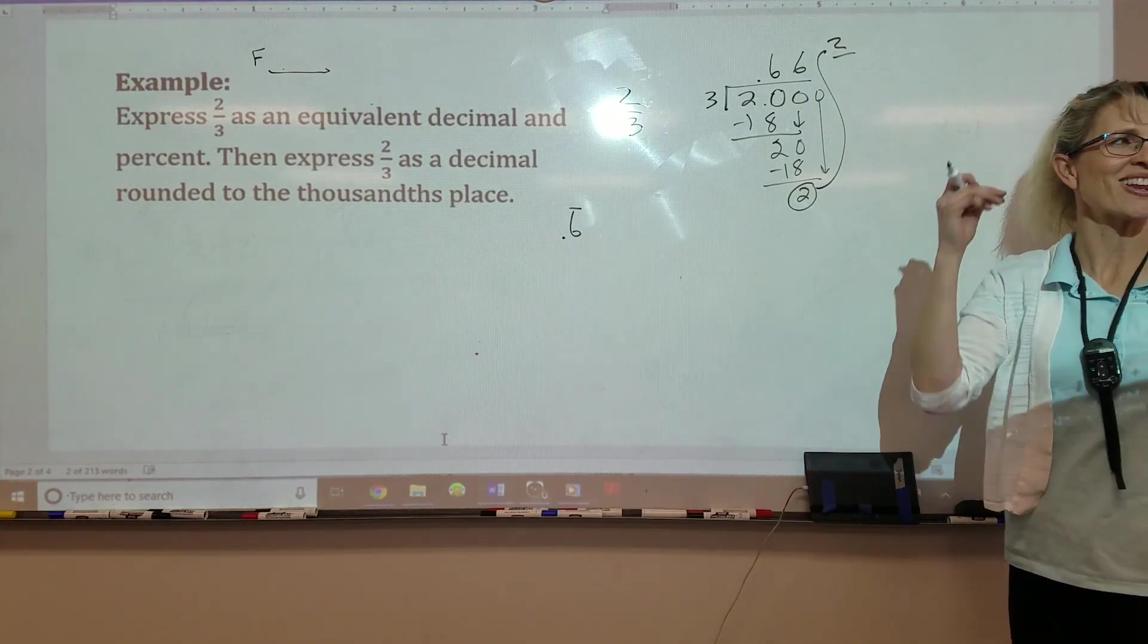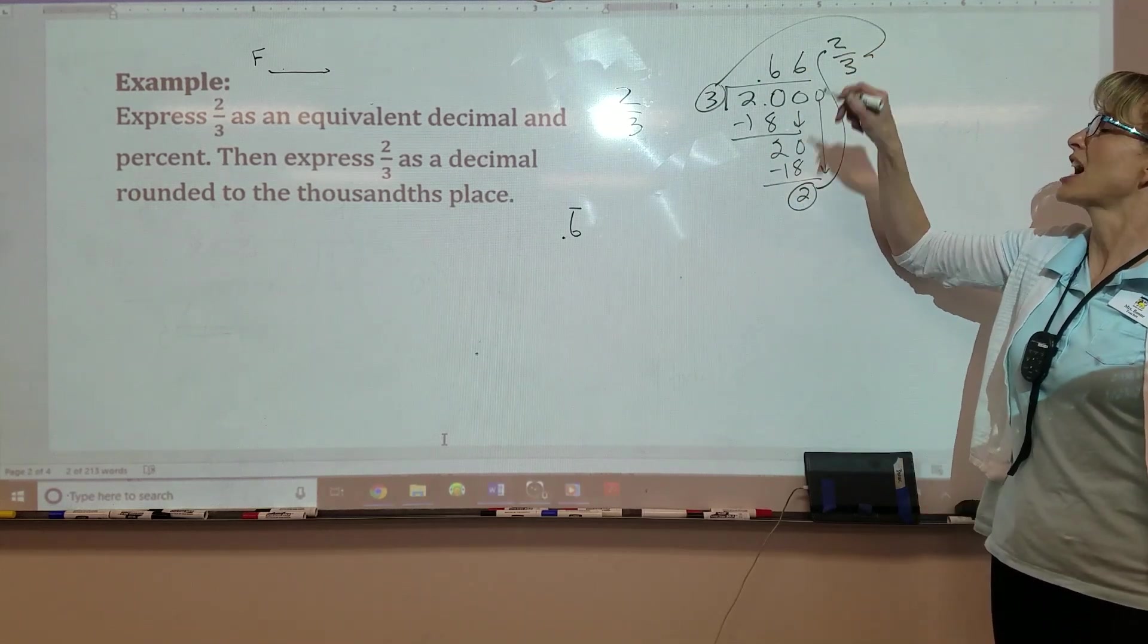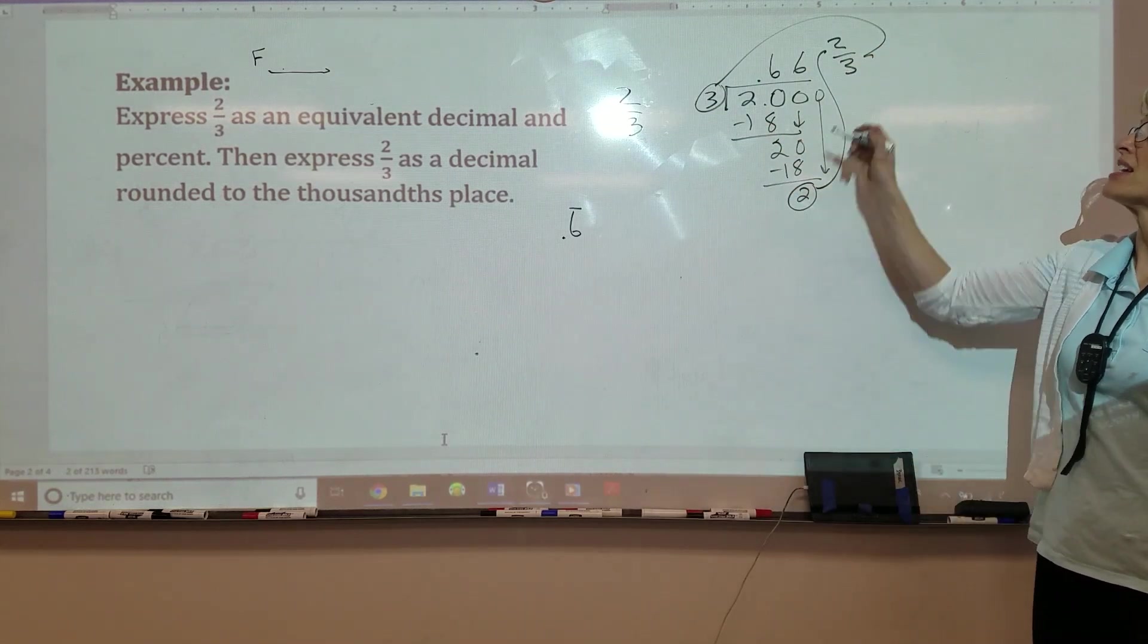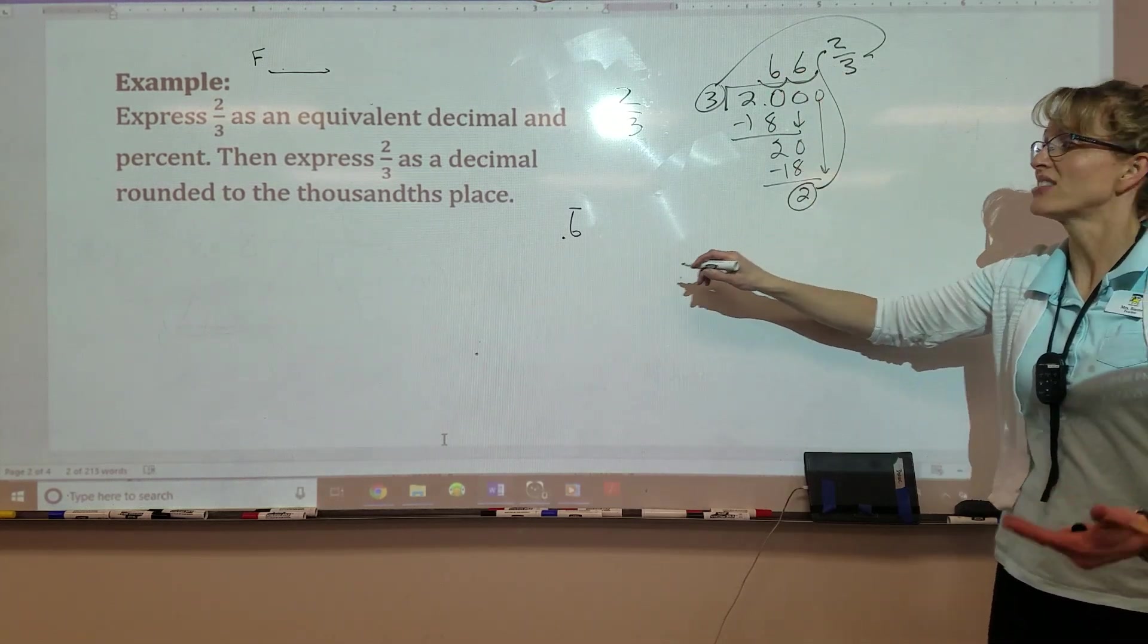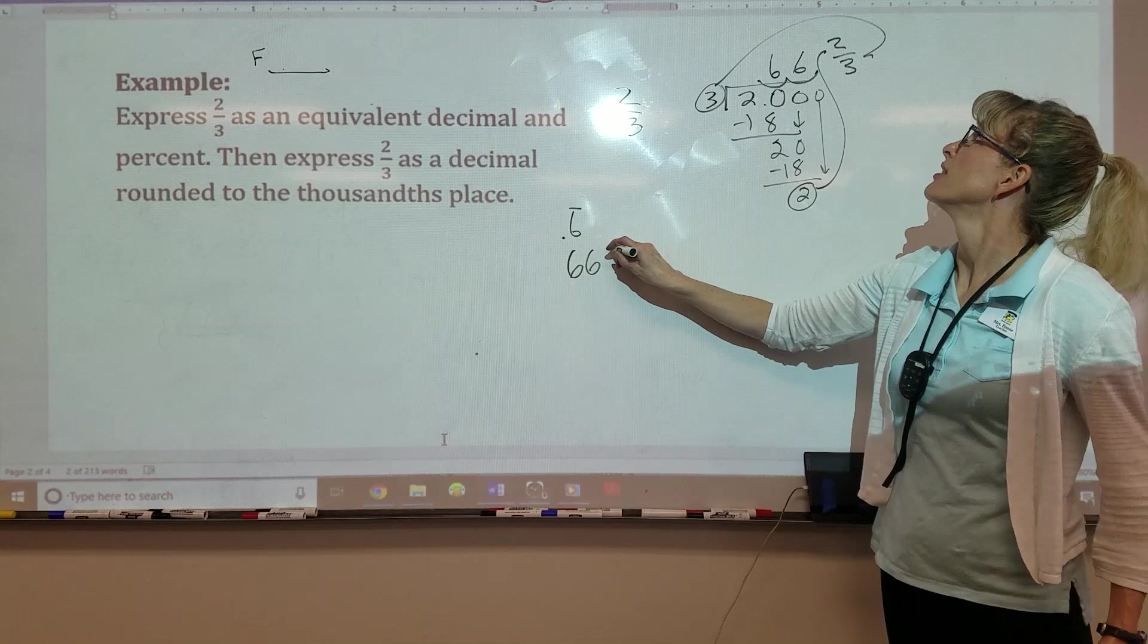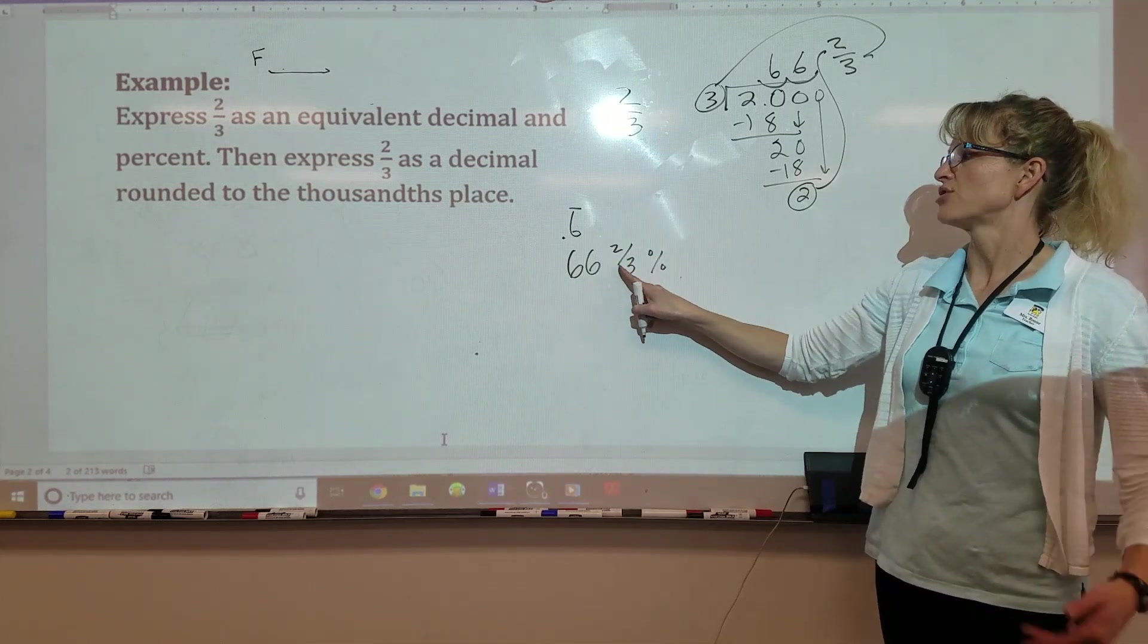What does your remainder become? Get ready. Numerator. Divisor becomes the denominator. Denominator. So now, and I move it over twice because I'm going to times it by 100%. Look at a percent. There's my percent.